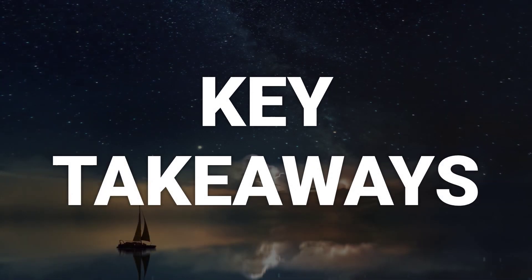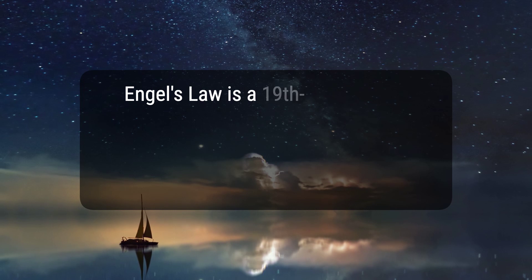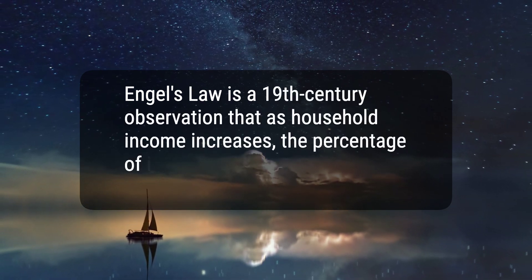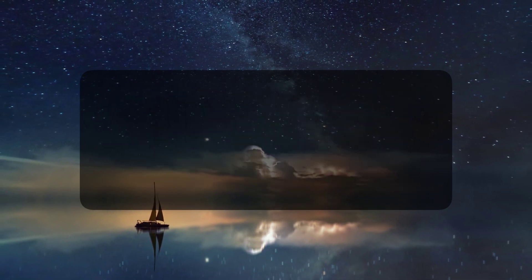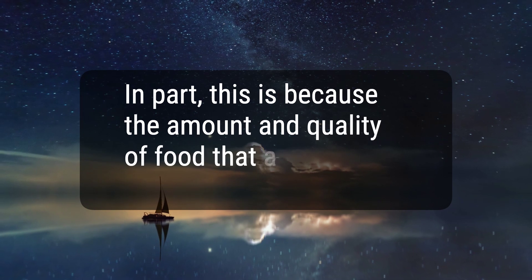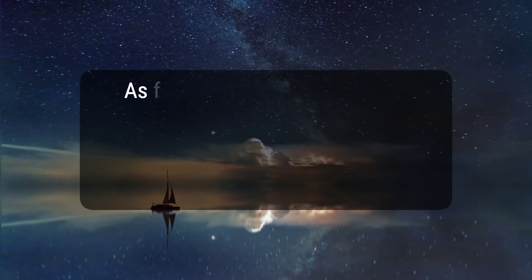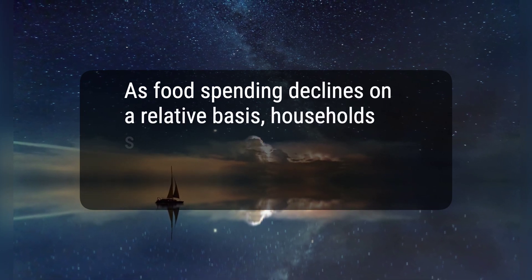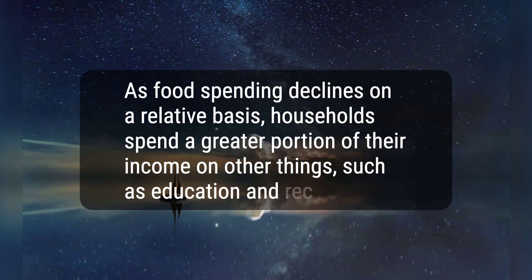Here are three key takeaways. 1. Engel's Law is a 19th-century observation that as household income increases, the percentage of income that a household spends on food will decline. 2. In part, this is because the amount and quality of food that a family can consume is fairly limited. 3. As food spending declines on a relative basis, households spend a greater portion of their income on other things, such as education and recreation.